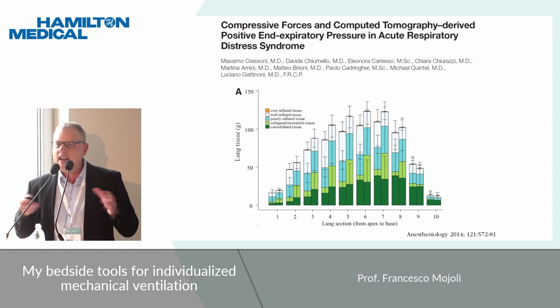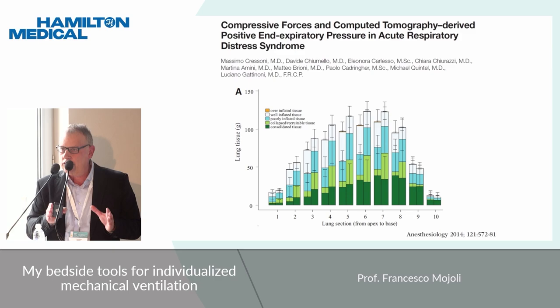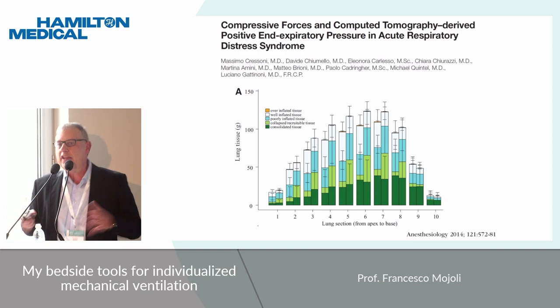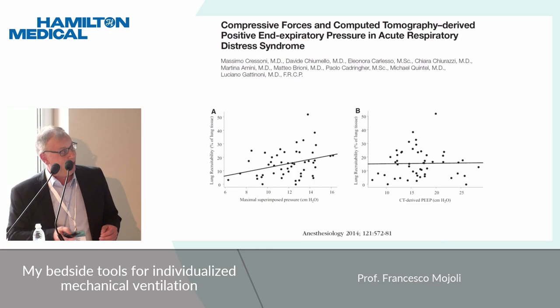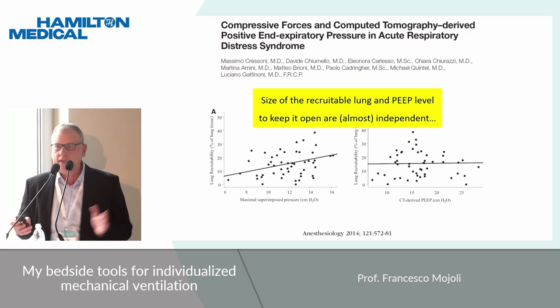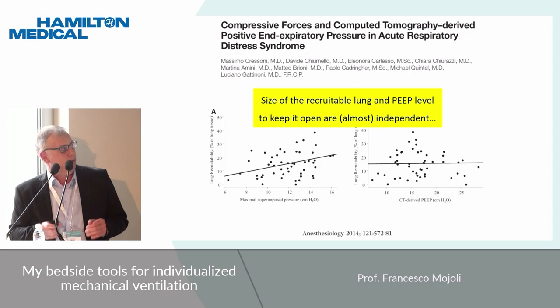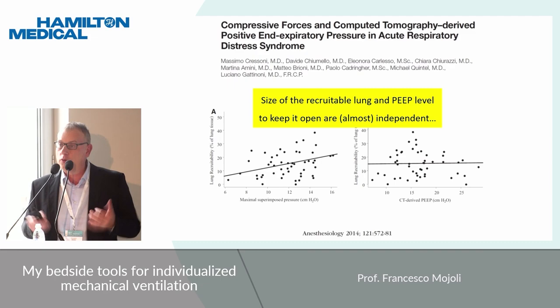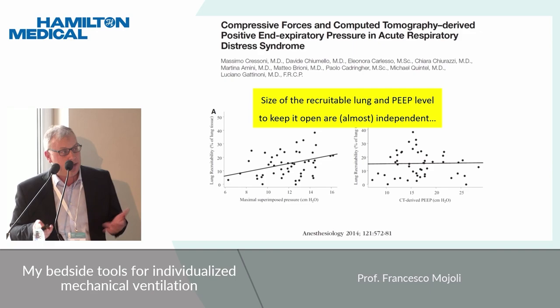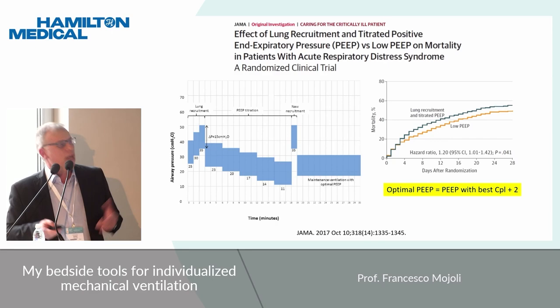Why? Massimo Cressoni, again from the Milano group, analyzed the relationship between the amount of lung tissue that is recruitable and the superimposed pressure — that means the pressure we have to apply to avoid expiratory de-recruitment and opening and closing. The result was disappointing, because it seems there is almost no correlation between the size of the recruitable lung and the PIP level needed to keep this lung tissue open. No correlation at all. So we need two pieces of information: how much is the recruitable lung, and how much pressure we need to keep this lung open.